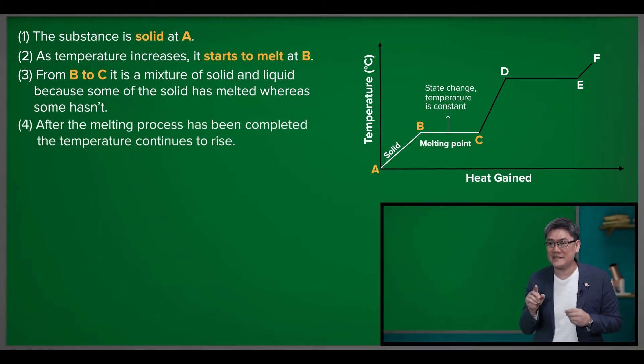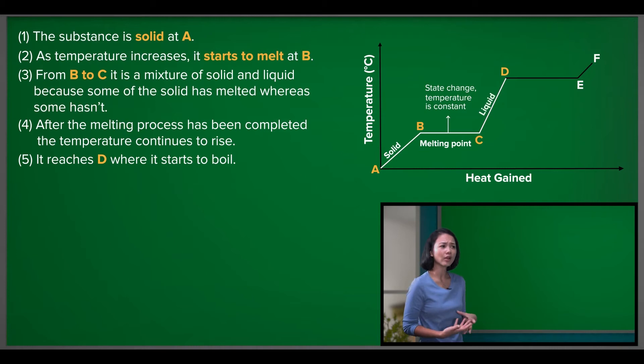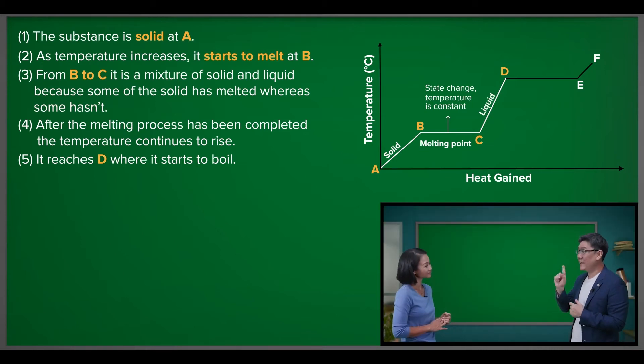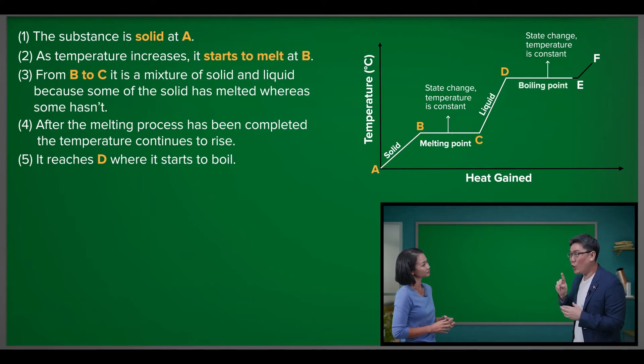After the melting process has been completed, the temperature continues to rise. And it reaches D, where it starts to boil. There you go. Again, the temperature of the substance stays constant during the boiling process.